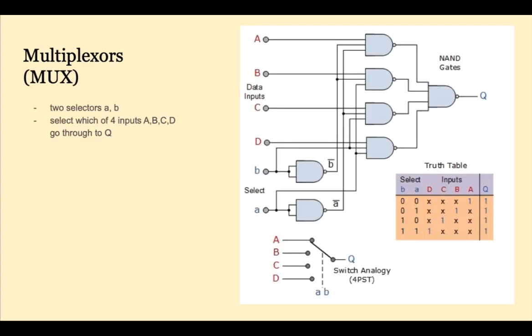Here we see one way a multiplexer could be implemented. We have 2 selectors, the lower case A and B. And these 2 selectors can select 2 to the 2 or 4 outputs. Based on these selectors, one and only one of inputs A, B, C, D is allowed to go to the Q output.